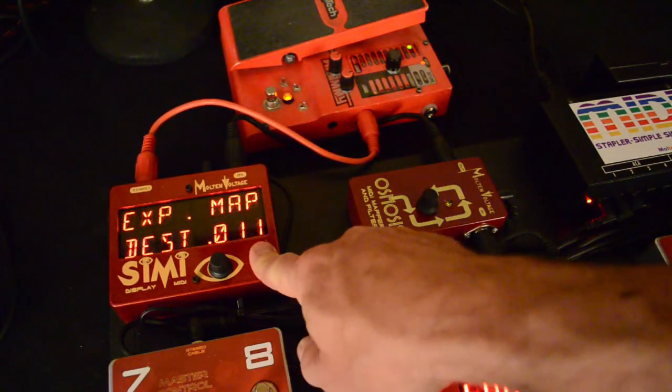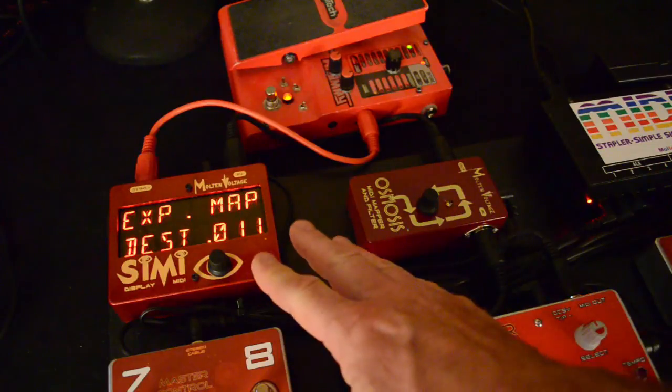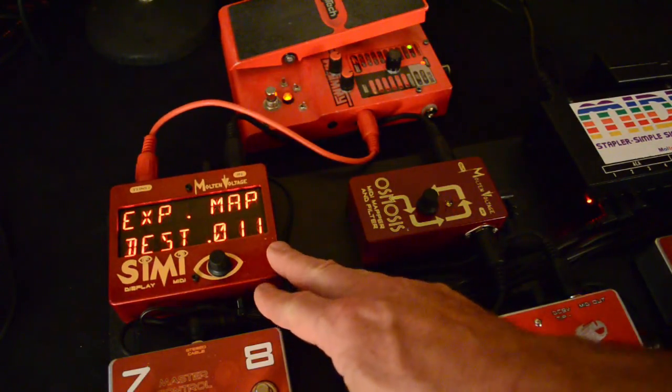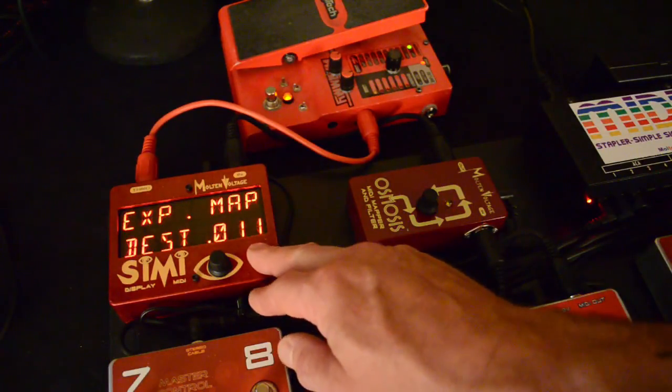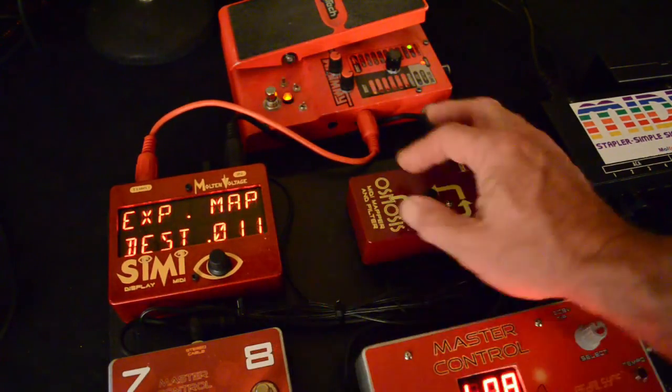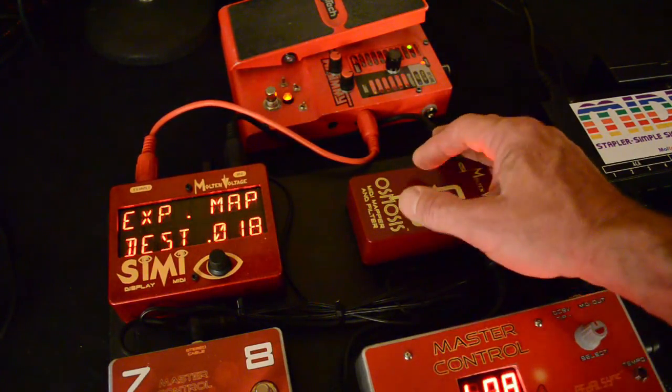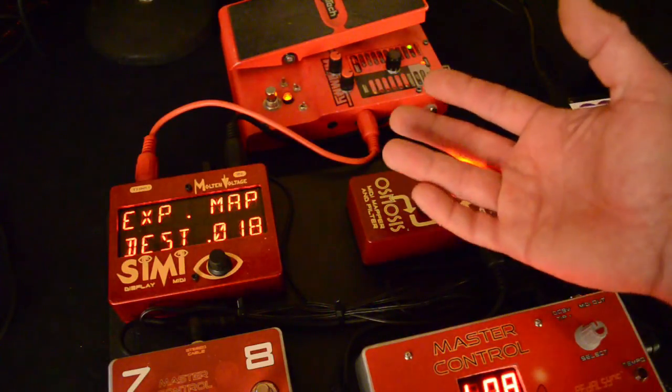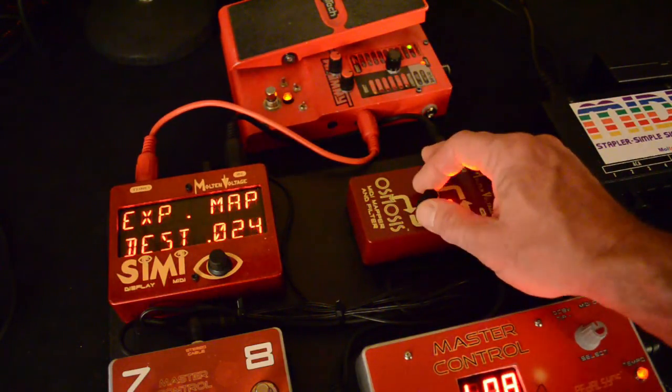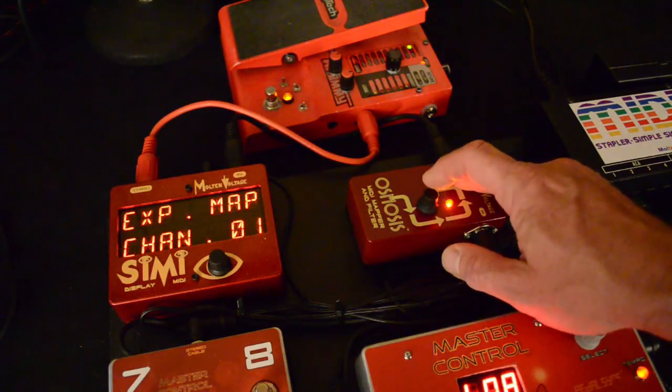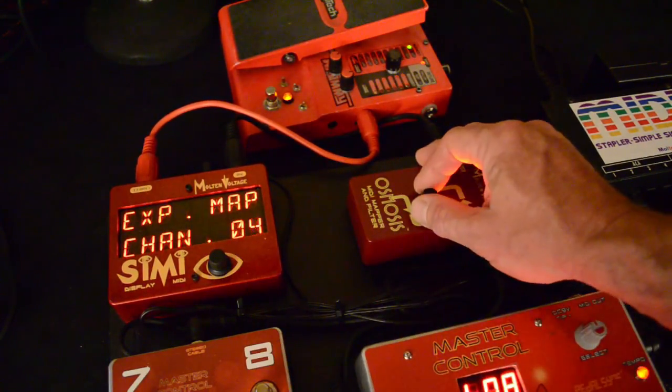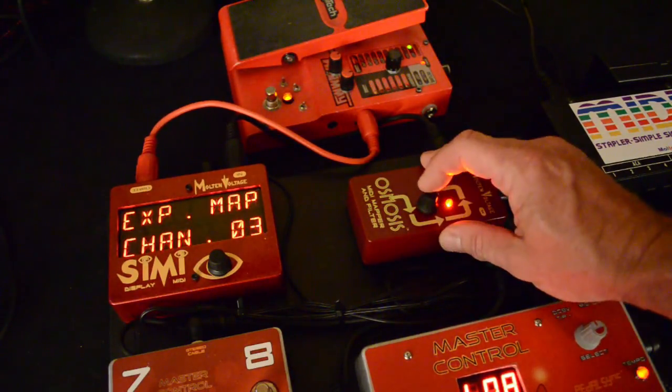And now here's the Expression Map Destination. Again, this can be set specially for each program. So the default coming in is 11. The default going out is 11, but we can change that because, say, the particular parameter you want to control for that song is on Controller 26. So we set it to that, and then we can set it to its own MIDI channel too. So say your Moog gear is on channel 3.